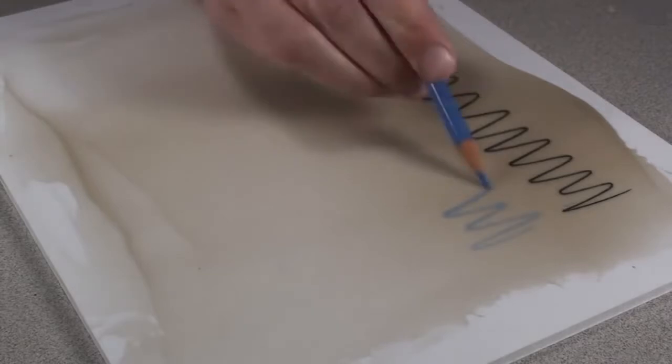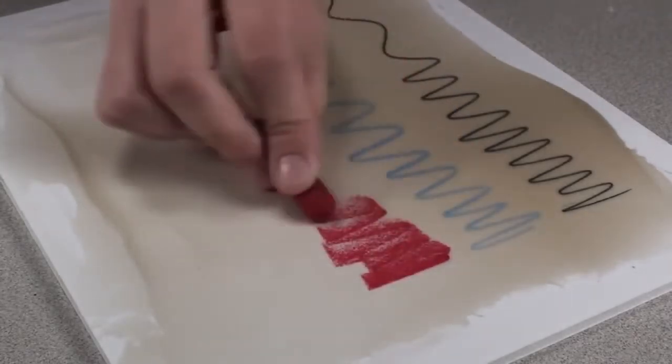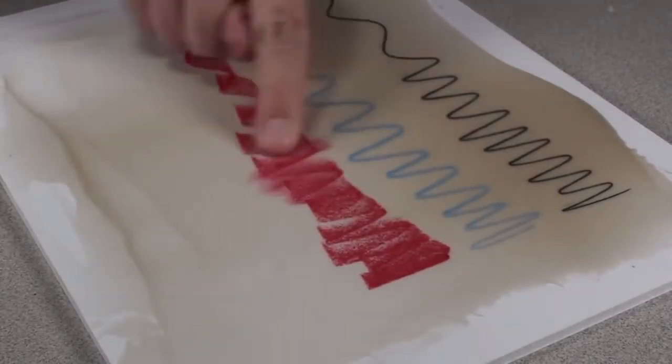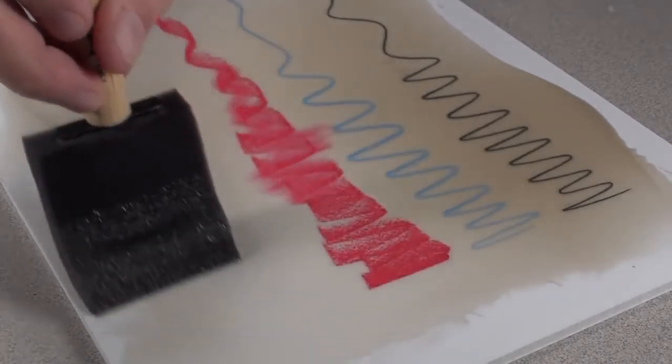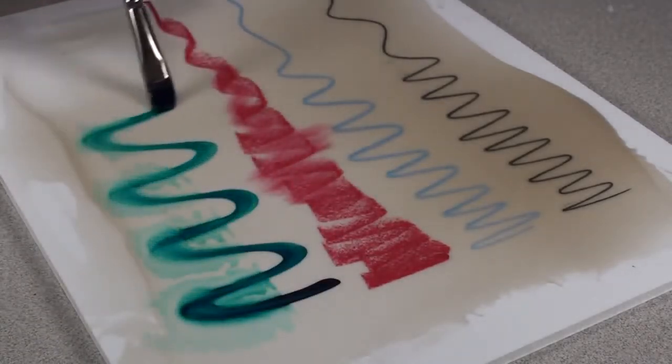Fine Pumice Gel makes a great foundation for drawing or painting. Its mildly toothy and absorbent surface accepts pencil, pastel, and watercolors, and will hold firm to any panel or surface that accepts acrylic paint.